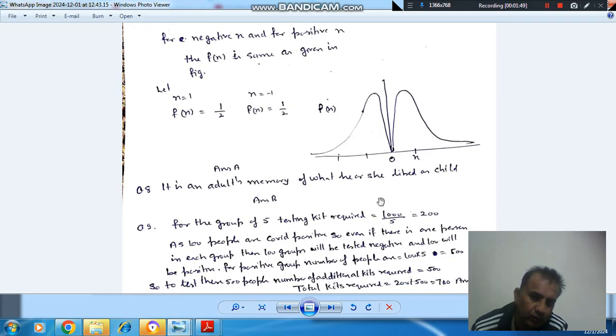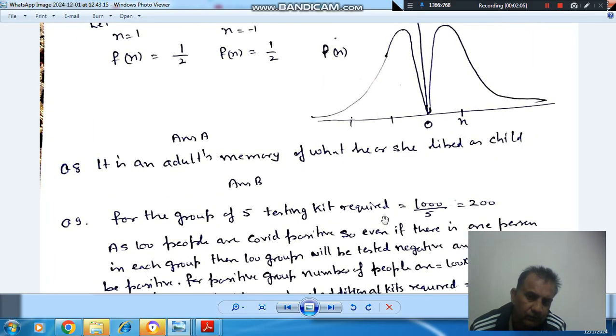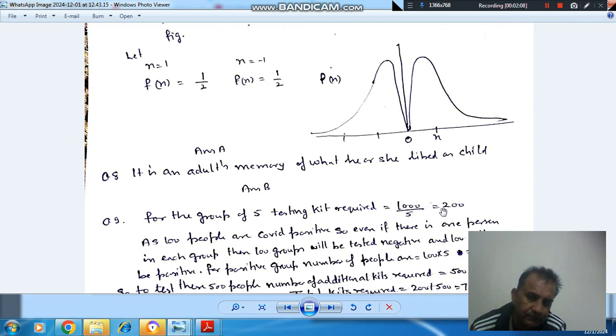First of all, we are grouping 1000 people into groups of 5, so total number of groups are 200. At least 200 testing kits will be required to check the saliva sample of the 1000 people.